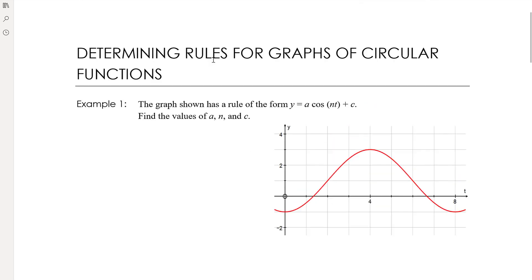In this video we are working backwards. This topic, up until now, we've done a lot of graph sketching — here is the equation, draw the graph — and now we're going to work in reverse: here is the graph, what is its equation? A trig function could be described using a sine or cosine equation, so you'll generally be given the form of the equation to indicate whether we're after a sine or cosine function and whether it's to be reflected or translated.